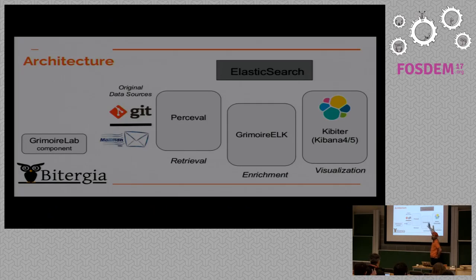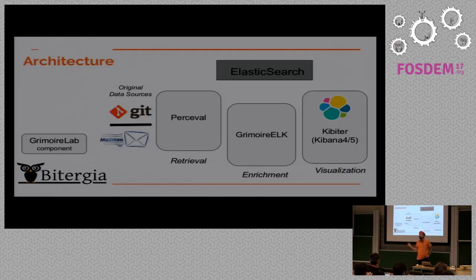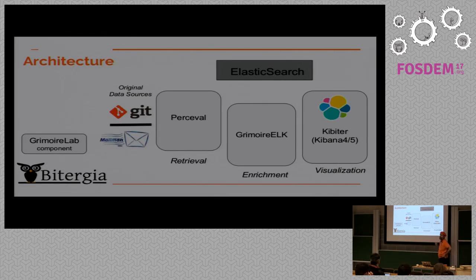Then we have Grimoire Elk. Grimoire Elk takes those raw indexes with all the information and produces indices specific for Kibana — basically summaries of the activity. We try to produce information that we want to represent in Kibana. Grimoire Elk stores the new index in Elasticsearch, and in the end we have a soft fork of Kibana which we call Kibira, which produces what you saw in the first part of the talk.